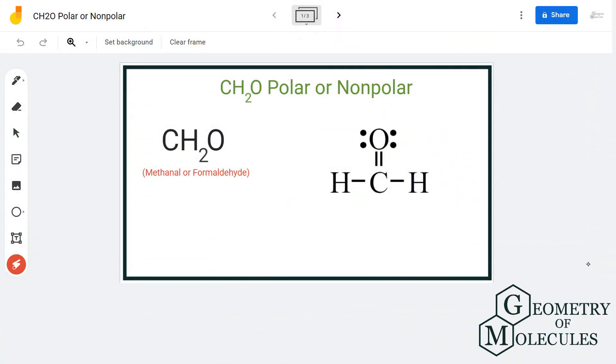Hi guys, today in this video we are going to determine the polarity for CH2O molecule. It's the chemical formula for formaldehyde and it is made up of one carbon atom, two hydrogen atoms, and one oxygen atom.